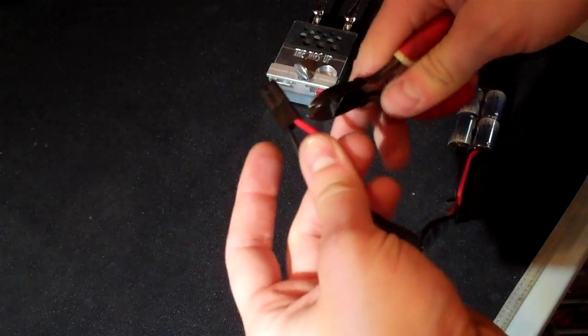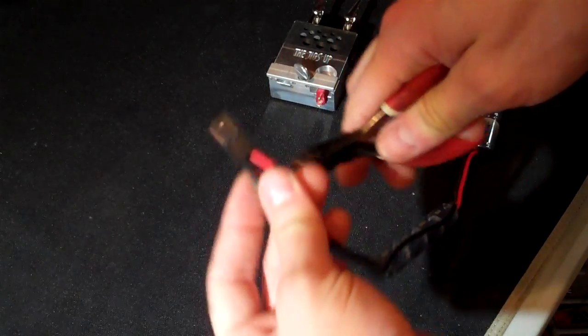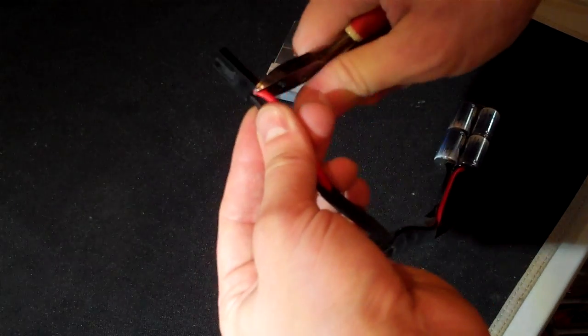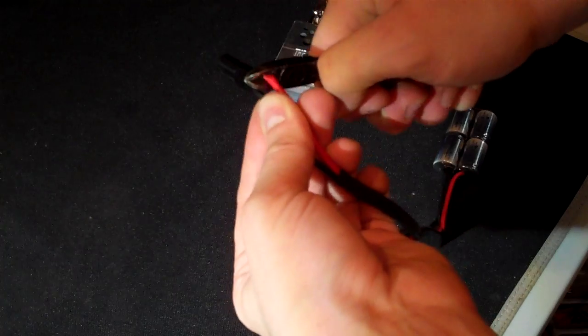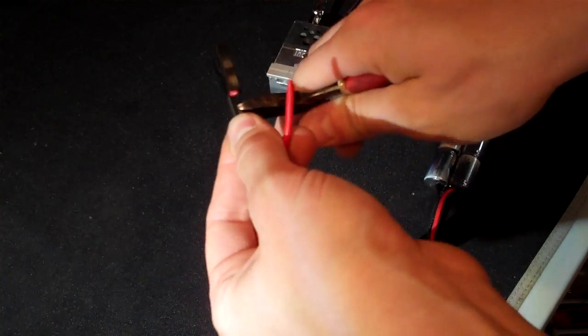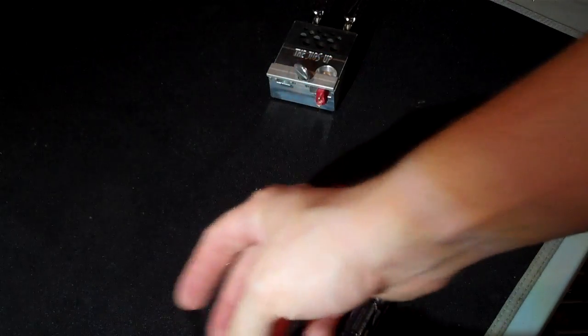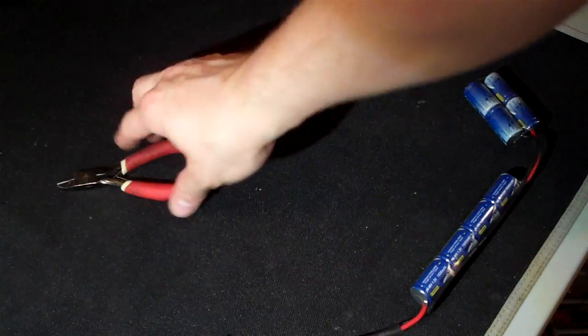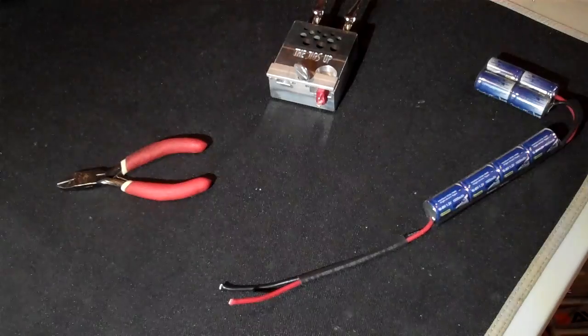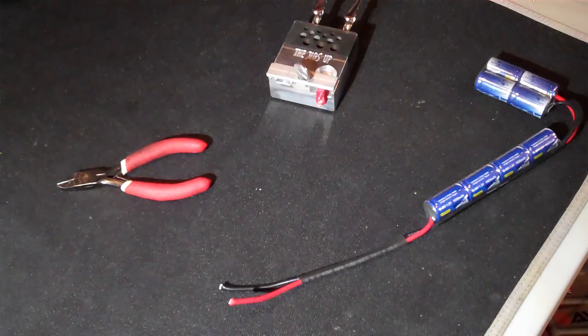So okay, first things first. Got your side cutters, you're going to cut the connector off like so. Like so, you don't want them to touch, so you go like that.